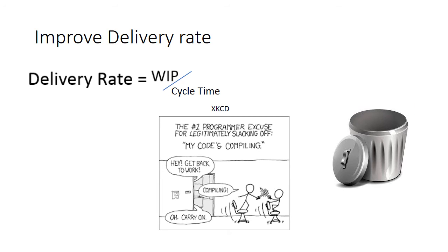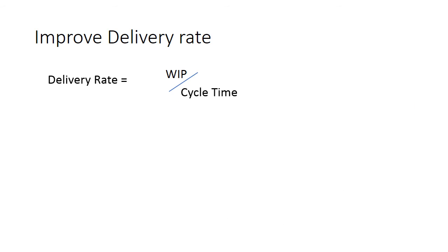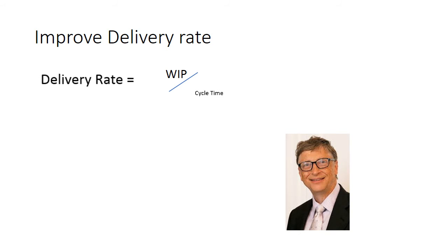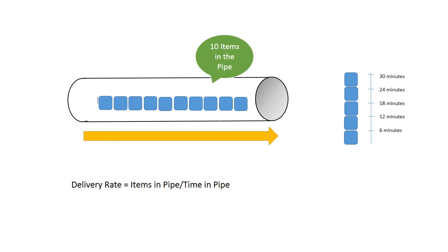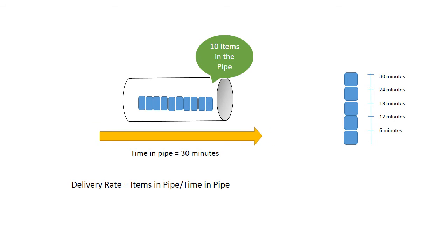So we want a different trick. We could try decreasing cycle time, which would increase the delivery rate, which would make the bosses happy. So what we really need to do is to shrink the pipe. And in software terms, we want to decrease the cycle time, not increase the work in progress. And if you think about that, that really makes sense.